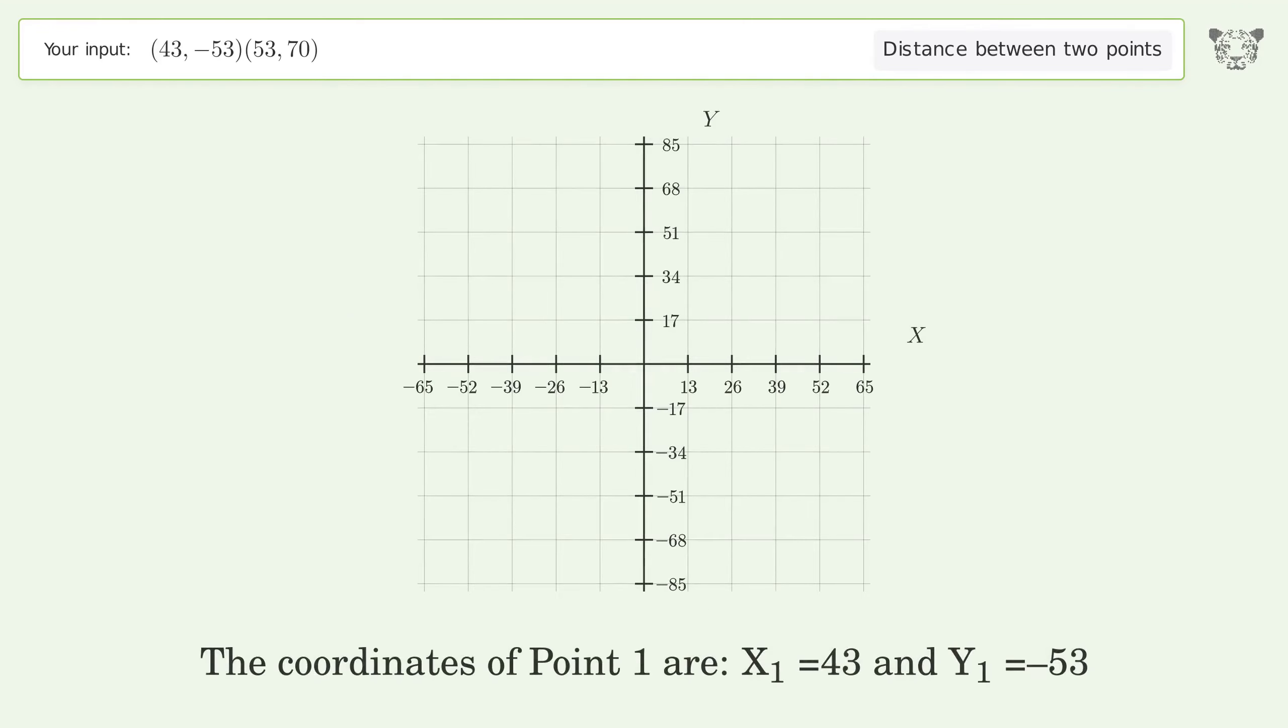The coordinates of point 1 are x1 equals 43 and y1 equals negative 53. The coordinates of point 2 are x2 equals 53 and y2 equals 70.